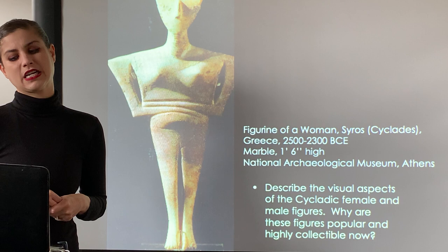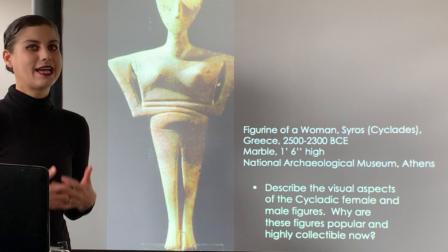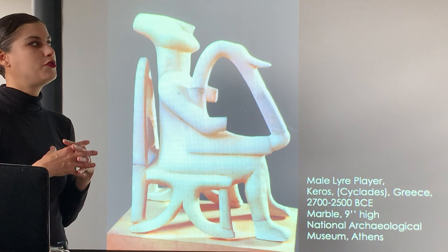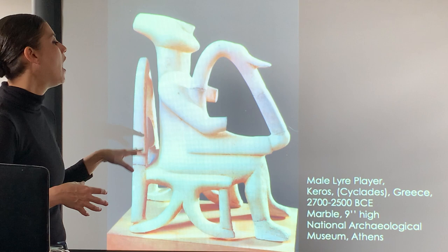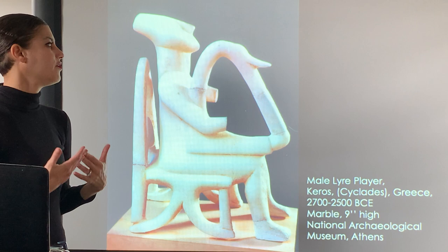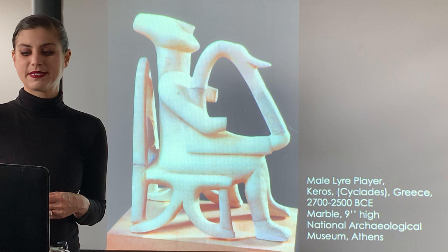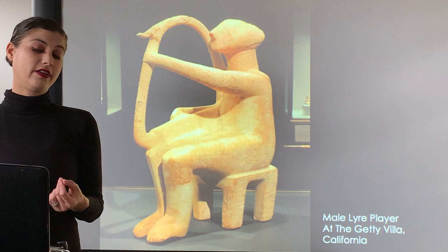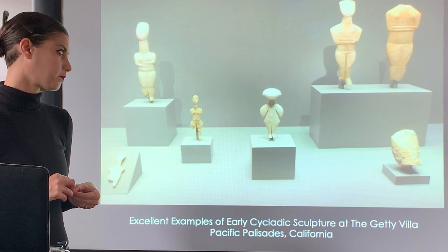You can see why these figures are so popular and highly collectible - the rarity and the simplicity of the forms. With the male lyre player, there's a beautiful relationship between the positive and negative space of this sculpture in the round. The architecture of the lyre itself is sort of mimicked in the architectural shapes of the chair, with a lovely sense of repetition. This one is at the National Archaeological Museum in Athens; another lyre player was photographed at the Getty Villa, showing varying types of Cycladic statue shapes.